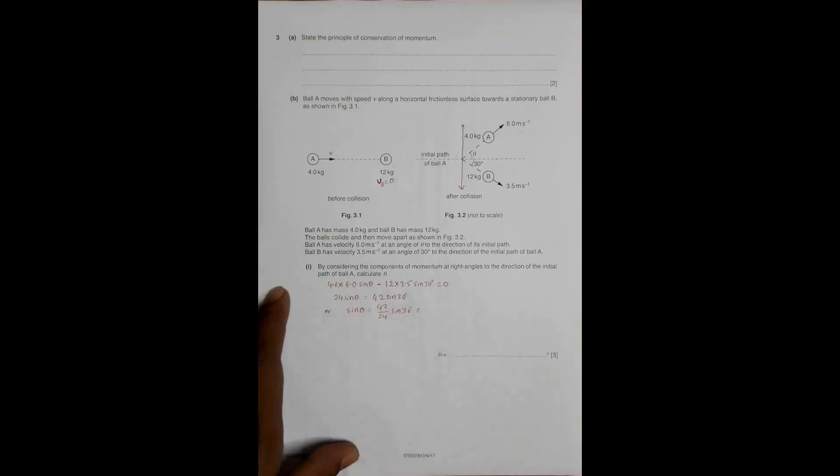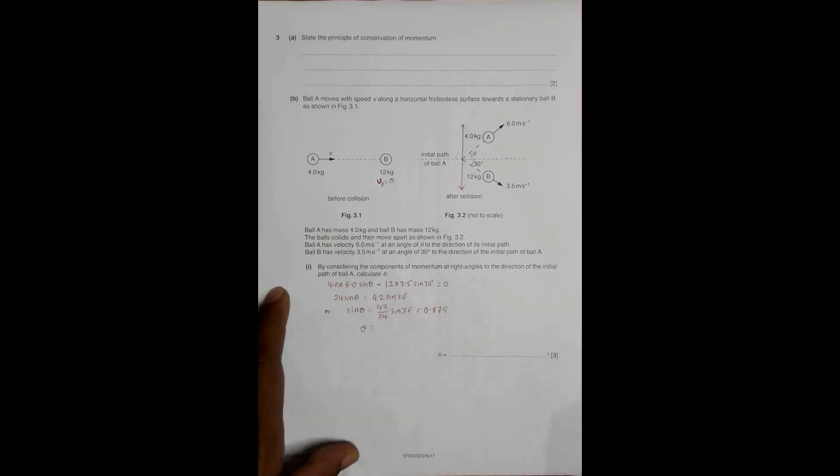Solving: 24 sin(theta) = 42 × sin(30°). So sin(theta) = 42/24 × sin(30°) = 0.875, which gives theta = 61 degrees.